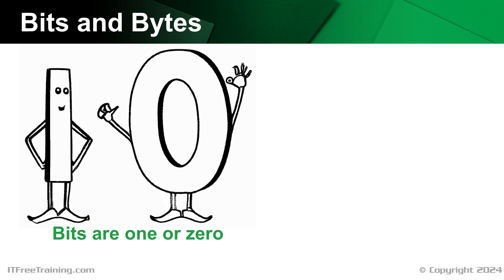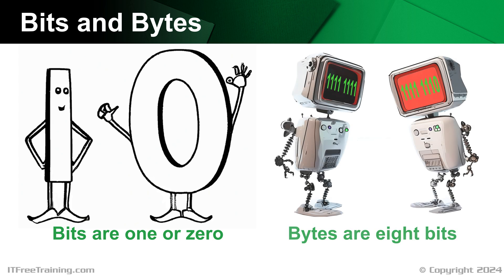The smallest unit of data inside a computer is generally a byte. A byte is 8 bits grouped together and in most computers is the smallest block of data that can be read from or written to. If the computer needs to change a bit inside the byte, the computer essentially has to read the whole byte, change the bit, and then write the byte back. Thus, a bit forms the smallest changeable unit in a computer, but a byte is the smallest block of data that can be accessed - kind of like buying a carton of eggs, where you may only want one egg, but you need to buy the whole carton.